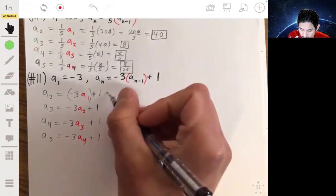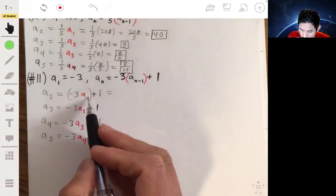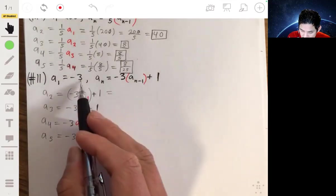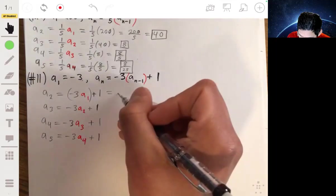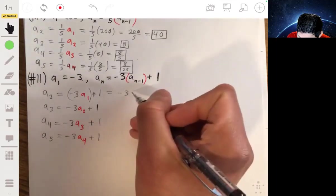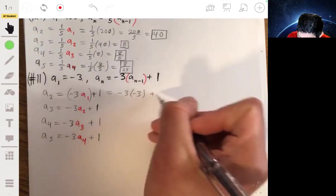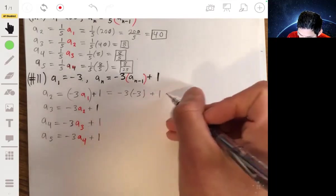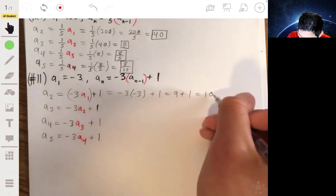So let's go ahead, let's calculate these. So a2 would be negative 3 times a1. a1 is given as negative 3, so this would be negative 3 times negative 3 plus 1. Negative 3 times negative 3 is 9. 9 plus 1 is 10.